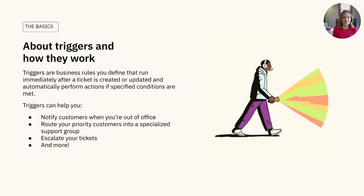Triggers are event-based business rules that you define, that run immediately after a ticket is created or updated and automatically perform actions if specified conditions are met. Think of triggers as cause and effect statements — if a ticket meets a set of conditions, then an action is performed.